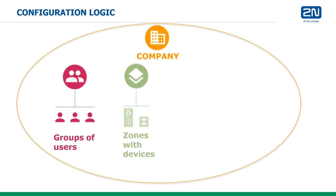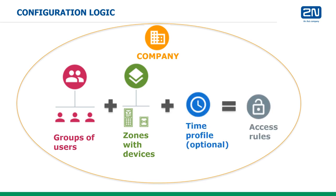Similarly, a company can contain devices and each device needs to be assigned to an entity known as a zone. In order to grant users access to specific areas, groups and zones need to be connected via an entity known as an access rule, which may optionally be restricted by setting a time profile.